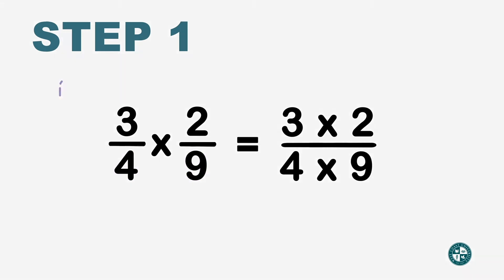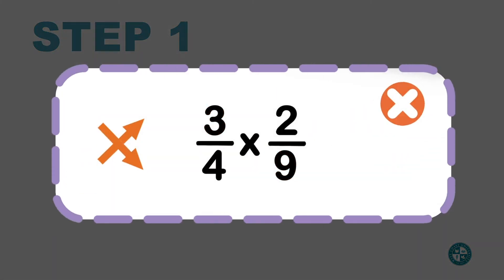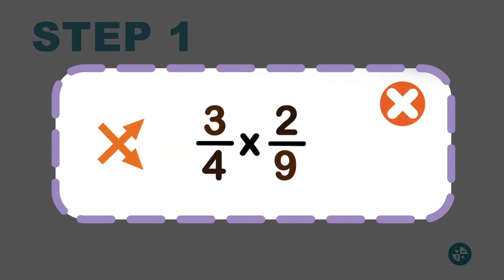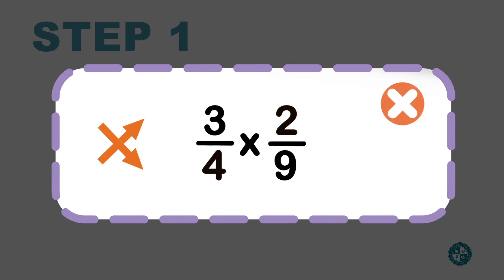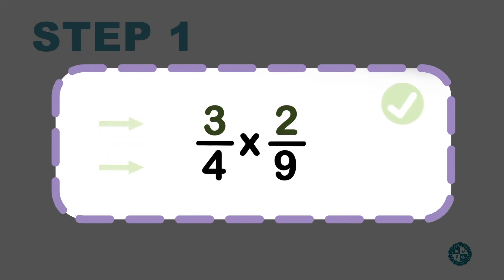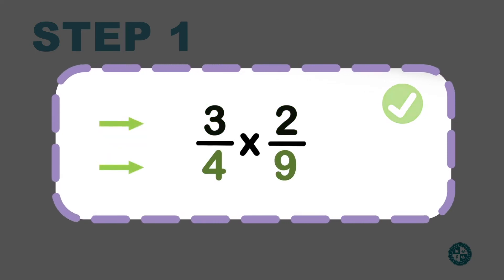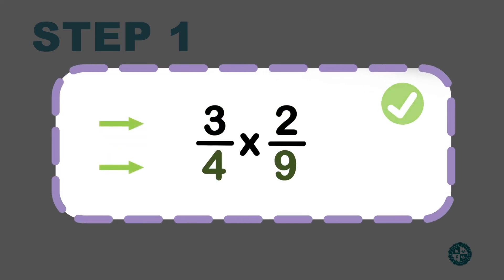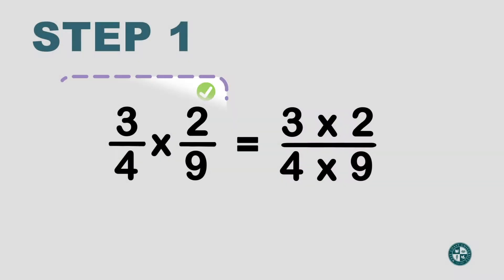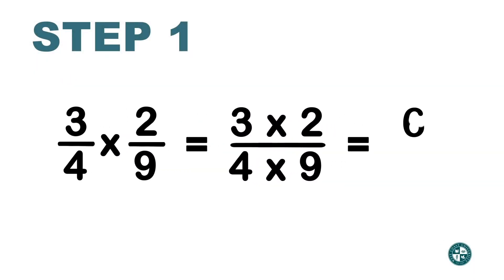Now if you notice, I didn't say multiply cross. Instead, you're multiplying across: top with top, bottom with bottom. So 3 times 2 is 6, and 4 times 9 is 36.